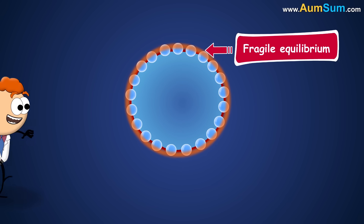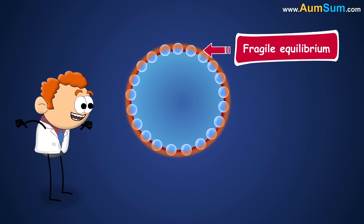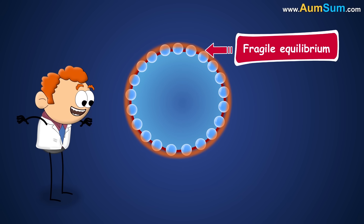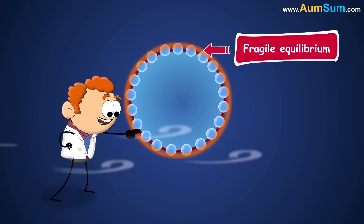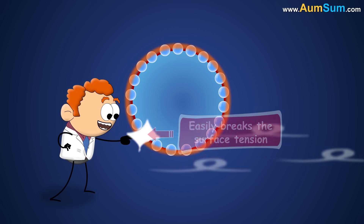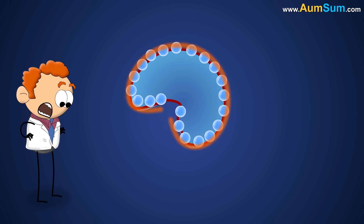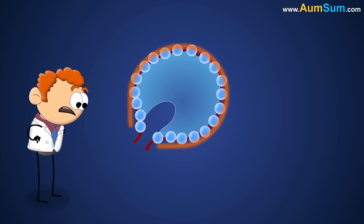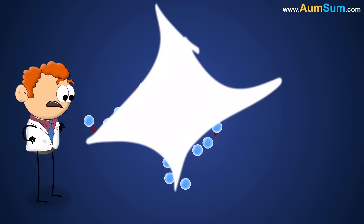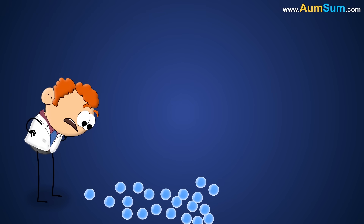However, since the equilibrium is fragile, just a gust of wind or our dry finger easily breaks the surface tension, thus breaking the tenuous layer and causing the bubble to pop.